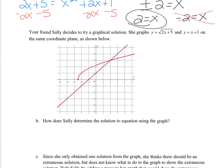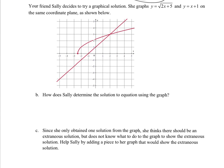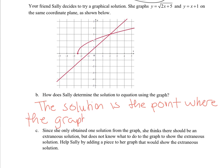Sally solves it graphically. How does she determine the solution? So for part b, it's where the graphs intersect. The solution is the point where the graphs intersect.